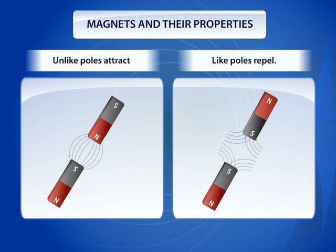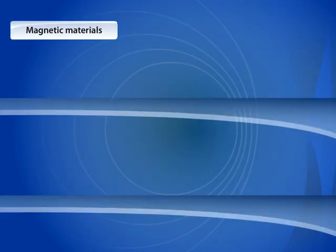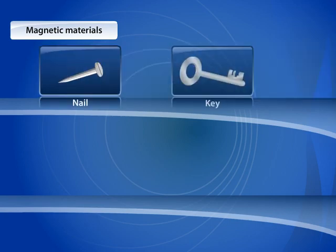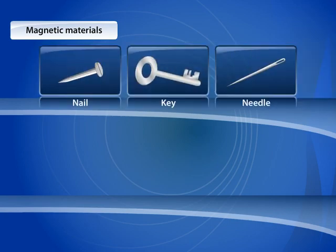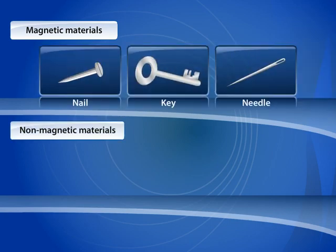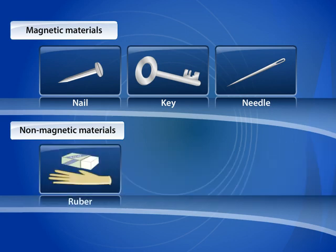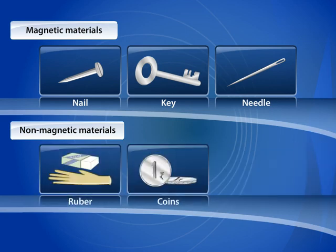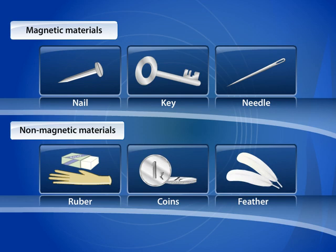Materials such as nails, keys, and needles are attracted by a magnet and are known as magnetic materials. Materials such as rubber, coins, and feathers are not attracted by a magnet and are known as non-magnetic materials.